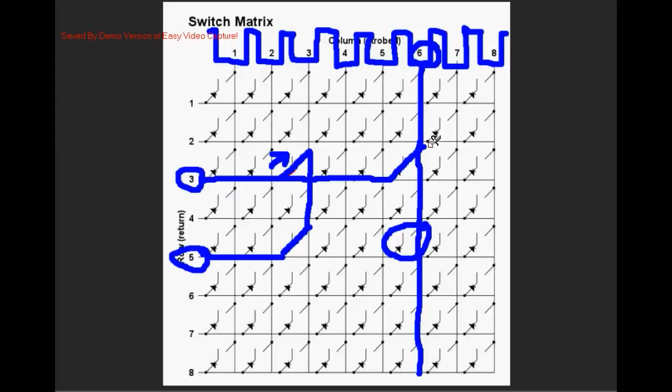For this problem to show up it requires a shorted diode with its switch closed and two other switches closed, and then a fourth position will falsely indicate that it's closed when it is not. These four switches will always form either a box or a rectangle.